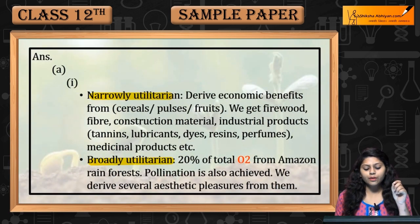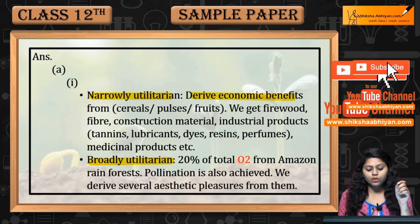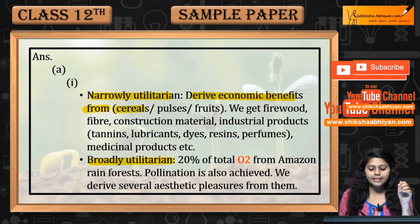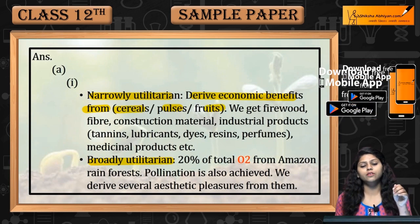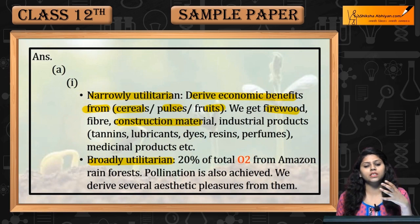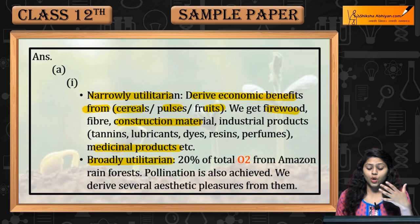Narrow Utilitarian: we derive economic benefits from cereals, pulses, and fruits. We also get firewood, fiber, construction materials, industrial products, medicinal products, etc.